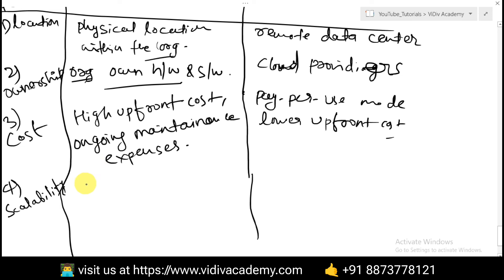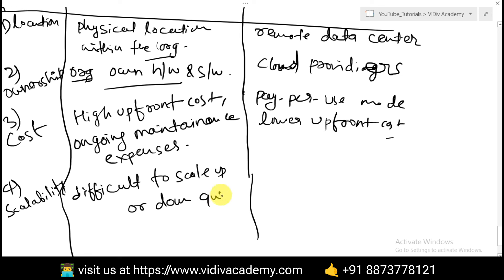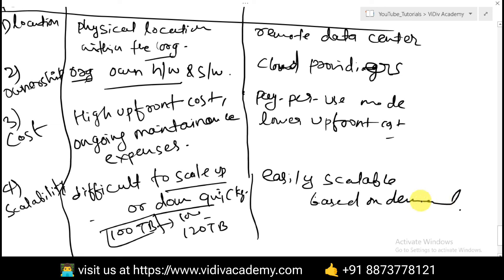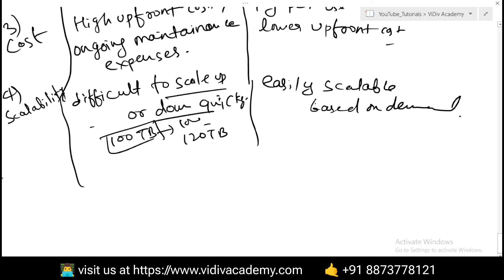Regarding scalability: on-premise is very difficult to scale up or down quickly — as illustrated by the 100 TB example where you can't easily accommodate 120 TB demand. With cloud computing, it is easily scalable based on demand — scaling down to 10 GB or up to 100 petabytes as needed.